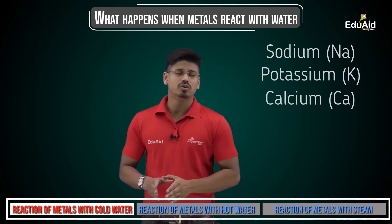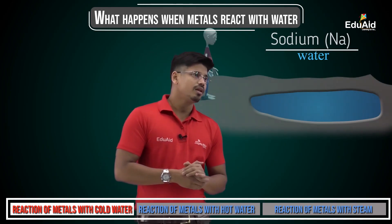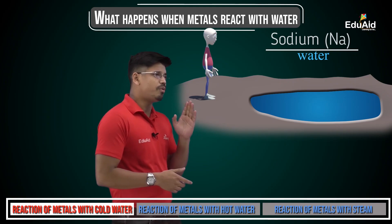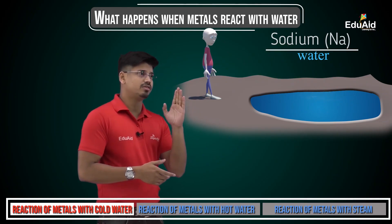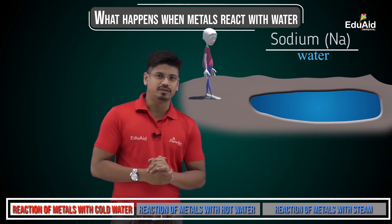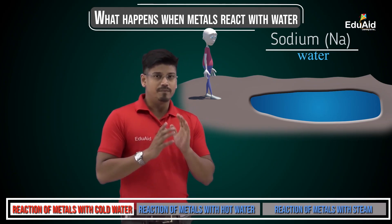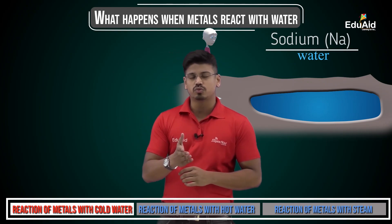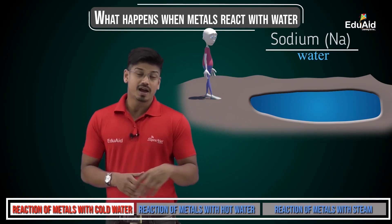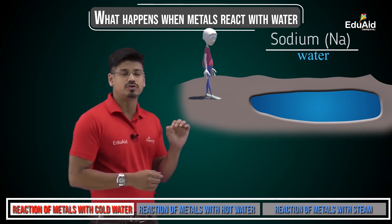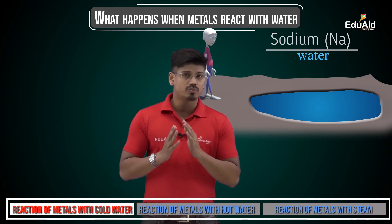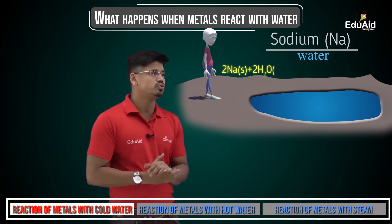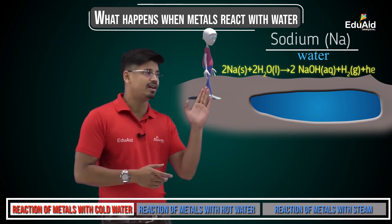Let's look at the reaction of sodium with water. There is a pond and a boy standing near it. When he throws pieces of sodium metal into the pond, an explosion takes place. This happens because sodium reacts with water releasing a huge amount of heat energy, which is enough for the hydrogen gas evolved during the reaction to catch fire. The reaction is: Na + H₂O → NaOH + H₂ + heat energy.